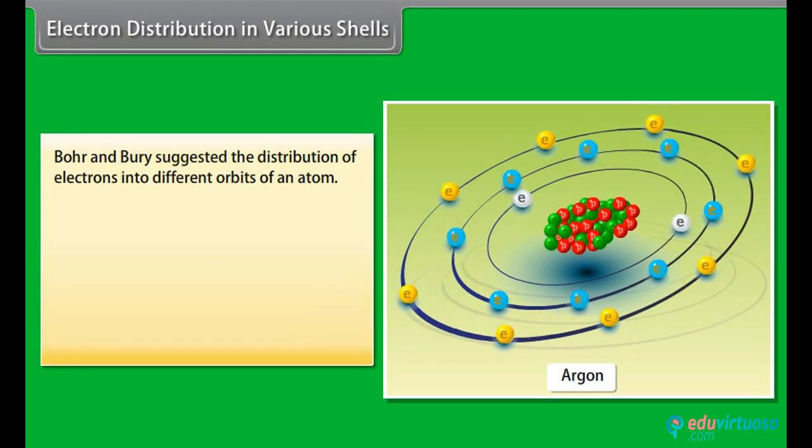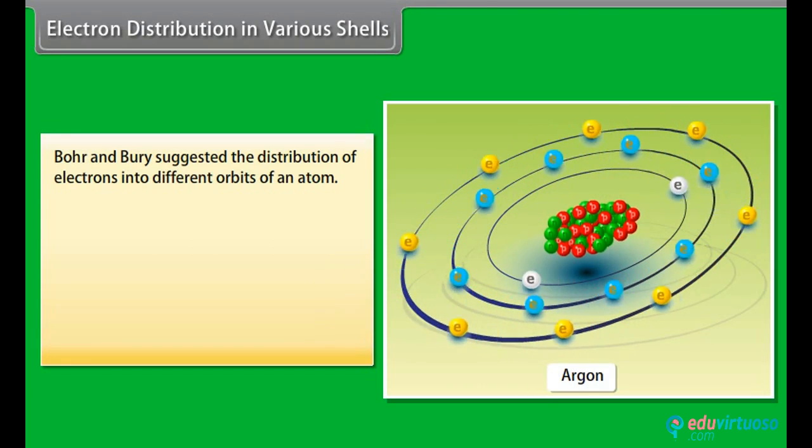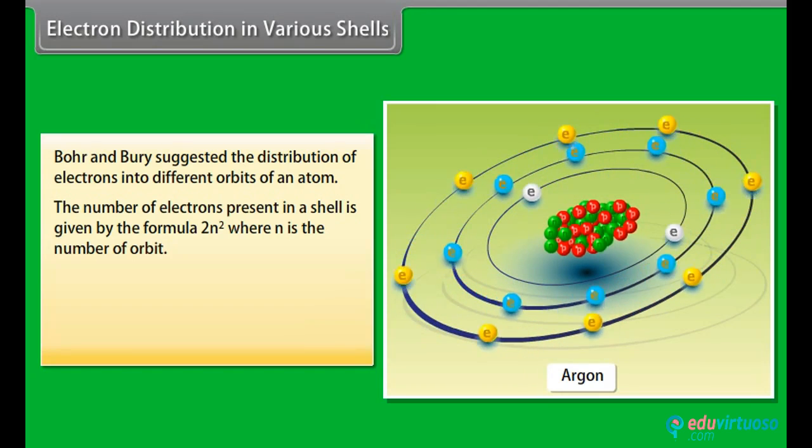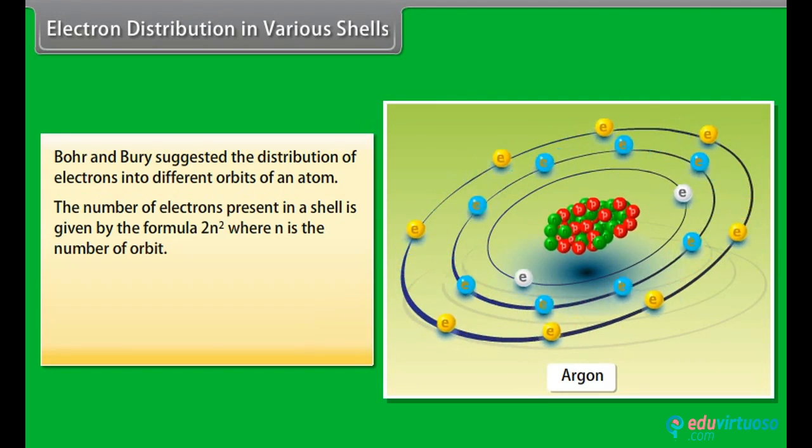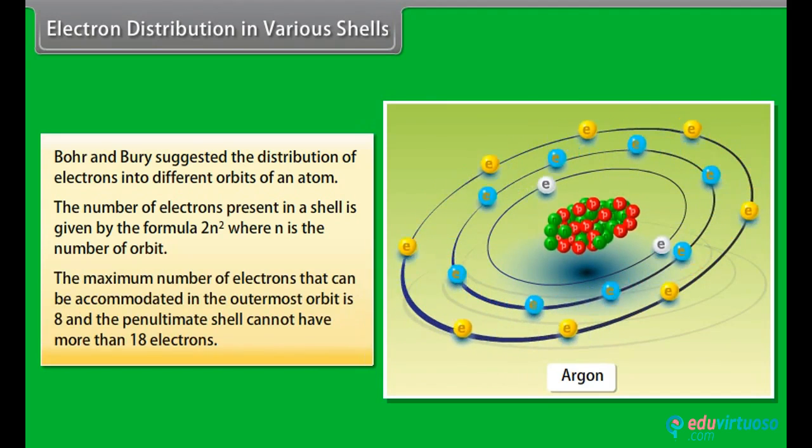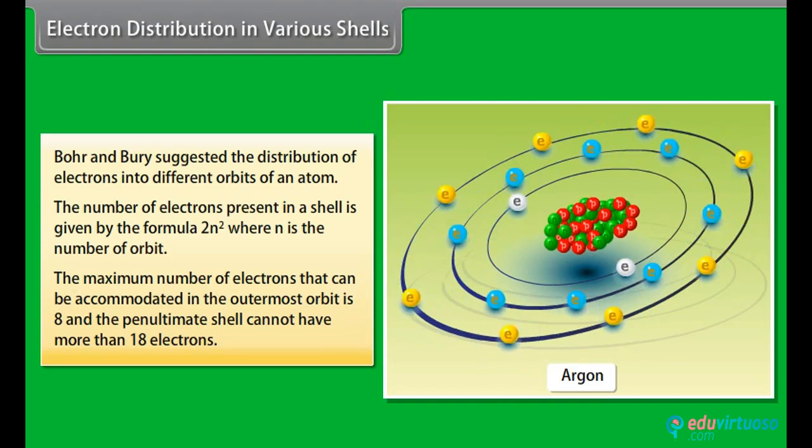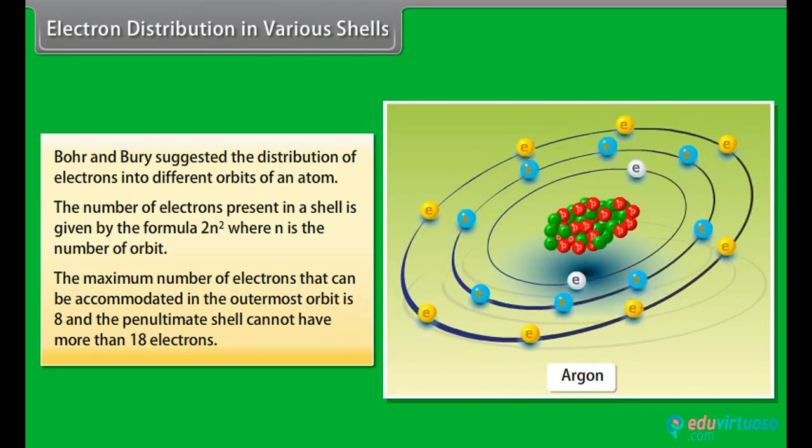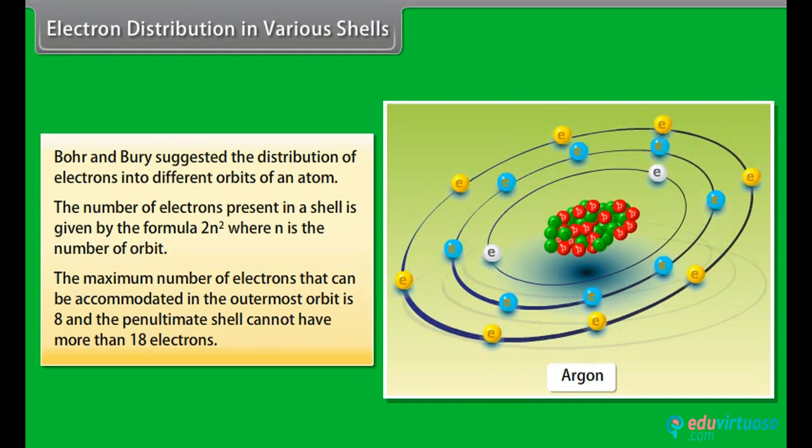Electron distribution in various shells. Bohr and Burry suggested the distribution of electrons into different orbits of an atom. The number of electrons present in a shell is given by the formula 2N squared, where N is the number of orbit. The maximum number of electrons that can be accommodated in the outermost orbit is 8, and the penultimate shell cannot have more than 18 electrons.